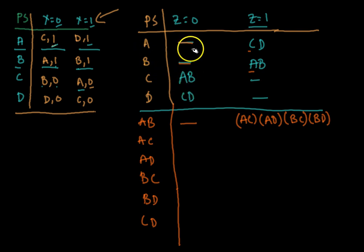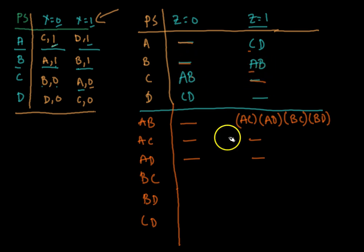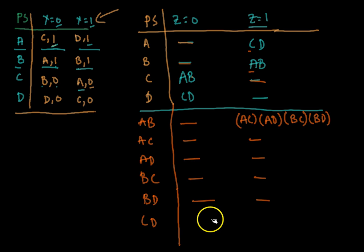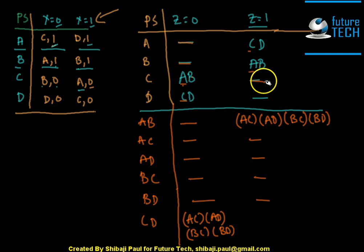For pair ac, z equals one gives ab with blank, so nothing there. For pair bd, z equals zero is blank again. For pair cd: z equals zero gives ab and cd, so we combine — a with c gives ac, a with d gives ad, b with c gives bc, and b with d gives bd. For cd under z equals one, both entries are blank so nothing. This completes the lower part of the testing table.